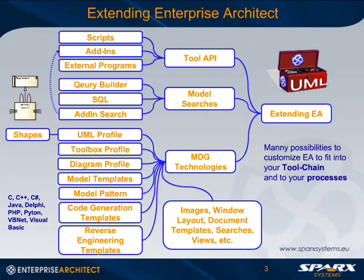The tool API can be used with a script. This is comparable to what you can do with Visual Basic for Applications in Office products — you can write macros directly within Enterprise Architect and execute them. Or you can write add-ins. An add-in is a kind of plug-in that extends the functionality of Enterprise Architect. You can react on events which Enterprise Architect provides, define your own user interfaces, and extend the functionality. Or you can write external programs to access the repository, the model, from outside.